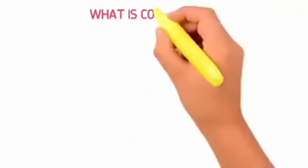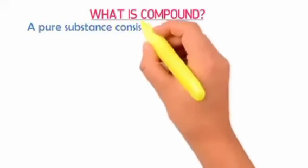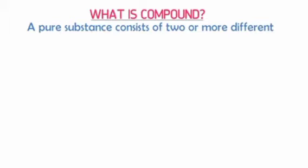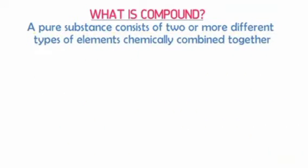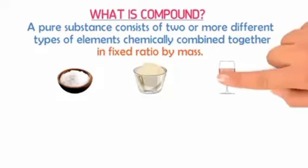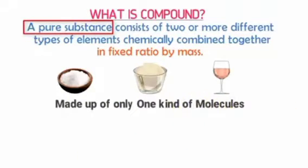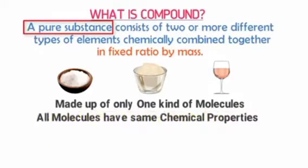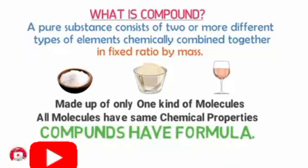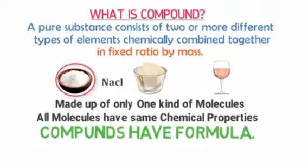What is a compound? A compound is a pure substance which consists of two or more different types of elements chemically combined together in a fixed ratio by mass. Look at salt, sugar, and water — those are pure substances consisting of two or more elements, made up of only one kind of molecule, and all molecules have the same chemical properties. Compounds always have a formula.